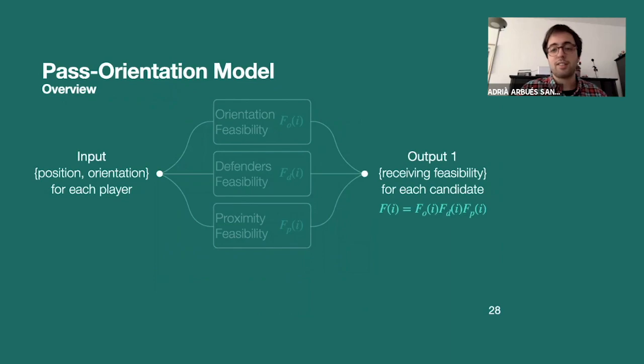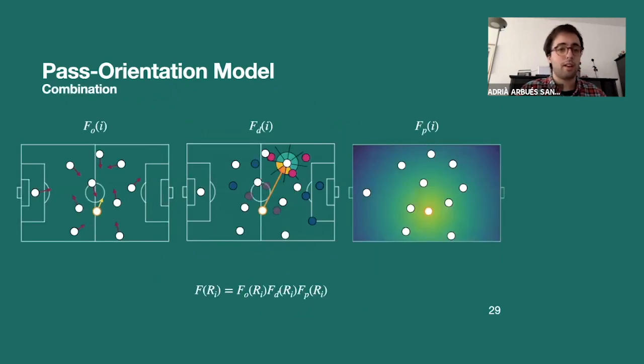And finally, since all of these individual feasibilities are independent, we can combine them and then we'll have one feasibility measure for every single potential receiver that will have features of orientation, defensive pressure, and pairwise distances with respect to the passer.